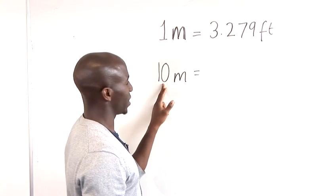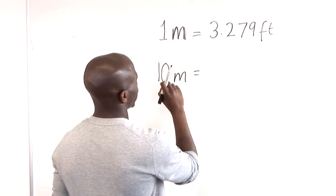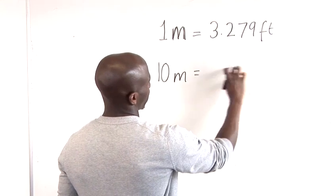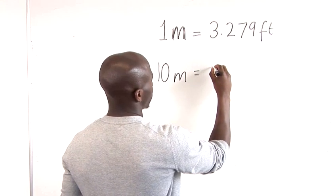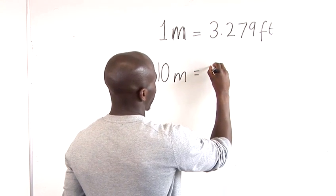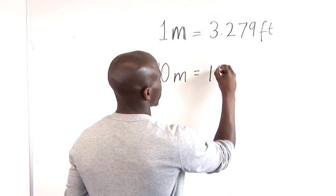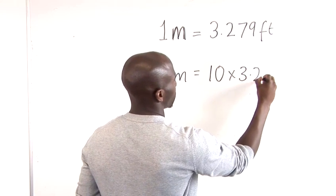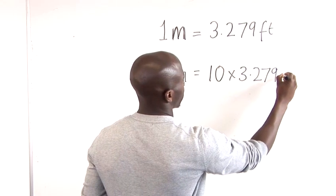Obviously all we have to do then is just multiply 10 by 3.279 to get the measurement in feet. So all we have for that is 10 times 3.279 feet.